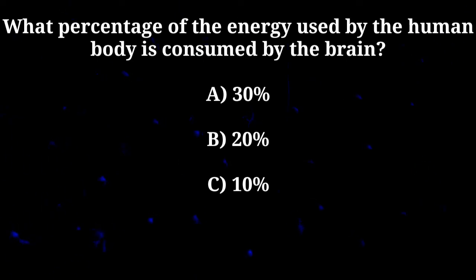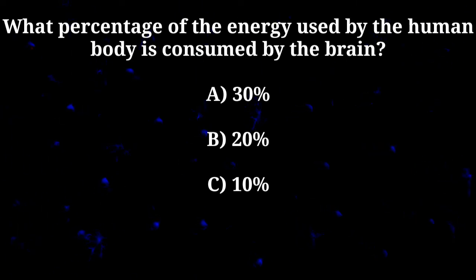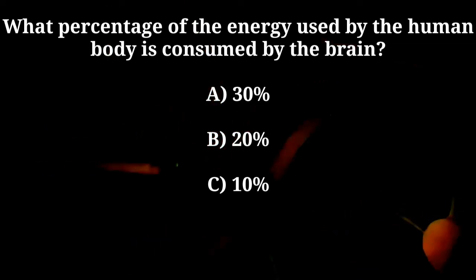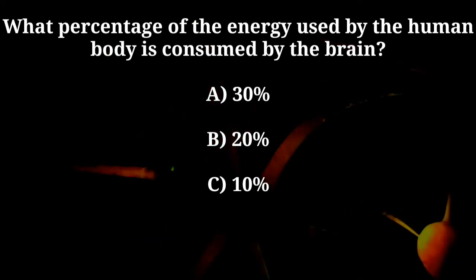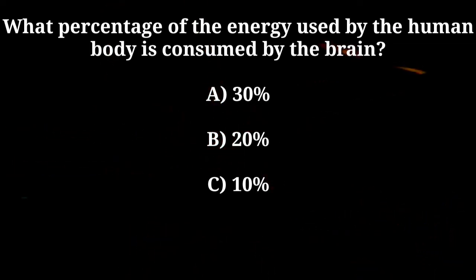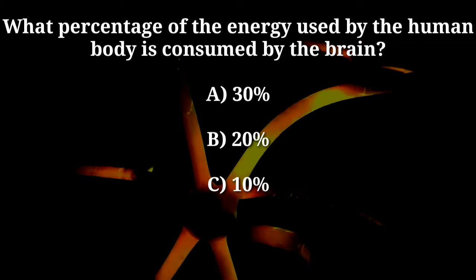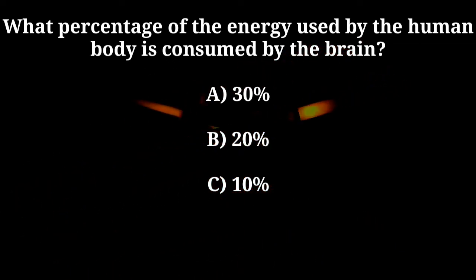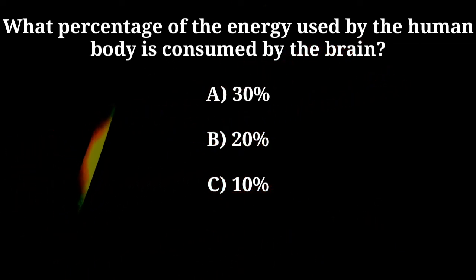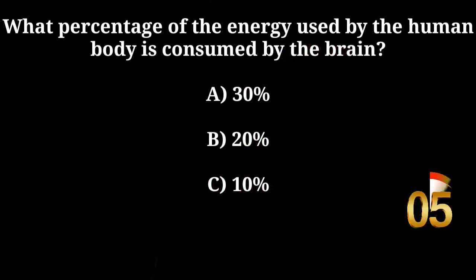What percentage of the energy used by the human body is consumed by the brain? A. 30%. B. 20%. C. 10%.